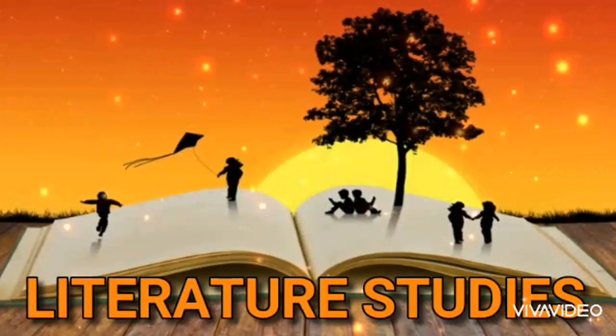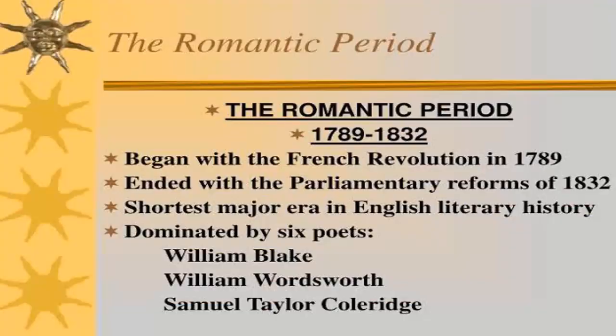Welcome to this lesson on the Romantic period. Romanticism is a name given to a dominant movement in literature as well as in arts, particularly in music and painting, in the period from the 1770s to the mid-19th century. It is regarded as having transformed artistic styles and practices. It is a movement in art and literature in the 18th and 19th centuries in revolt against the neoclassicism of the previous centuries.